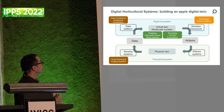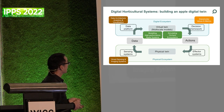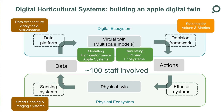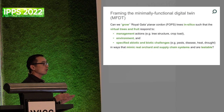Currently we have five programs, each with about two million New Zealand dollar annual budget, and about 100 staff involved in the overall work. We have two modeling programs — one focused on the apple tree model and one on the orchard ecosystem — and a smart sensing and imaging system working with field phenotyping, different from glasshouse and growth chambers. We have a data architecture analytics and visualization program building the data and modeling platform for simulation. Together, those five programs are working on one objective: to develop a minimally functional digital twin first.